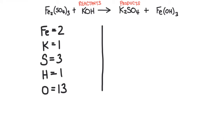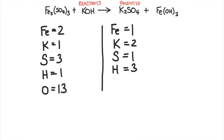On the product side, there are one iron atom, two potassium atoms, one sulfur atom, three hydrogen atoms, and seven oxygen atoms. When we balance chemical equations, we can change the coefficients in front of each chemical compound, but we cannot change the subscripts.